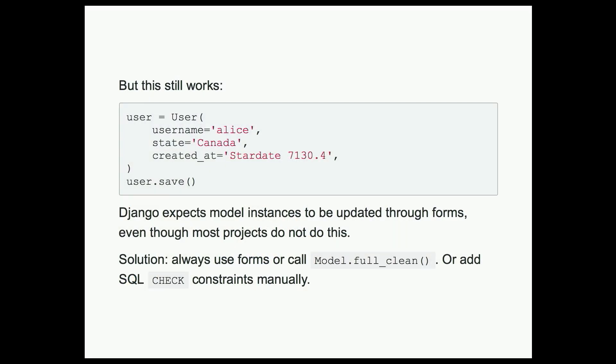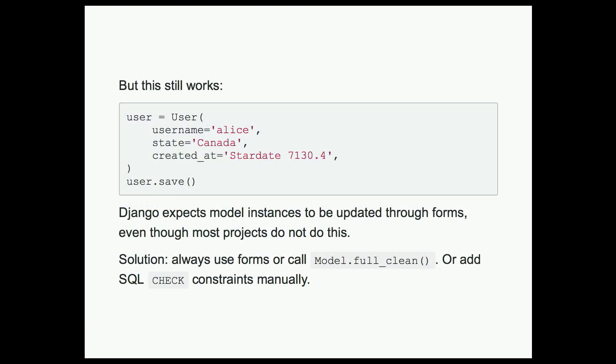This still works, for instance. Obviously Canada is not a US state, and date time probably does not understand star dates. So what's happening here is that Django expects model instances to be updated through forms, even though the projects I've worked on rarely do this. So if you're not going to use forms, you have to call model.full_clean, which reminds me a lot of MySQL real escape string. Or you have to add check constraints to your database manually, because if you run a migration after adding a choices constraint to your models, it's not going to generate a check constraint in the database.